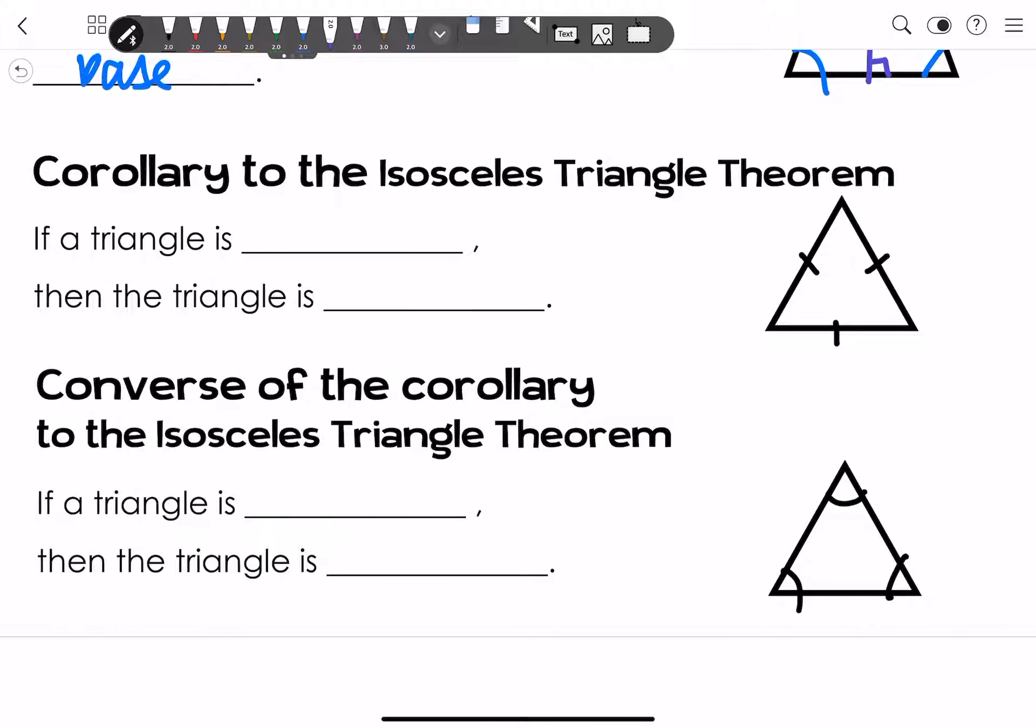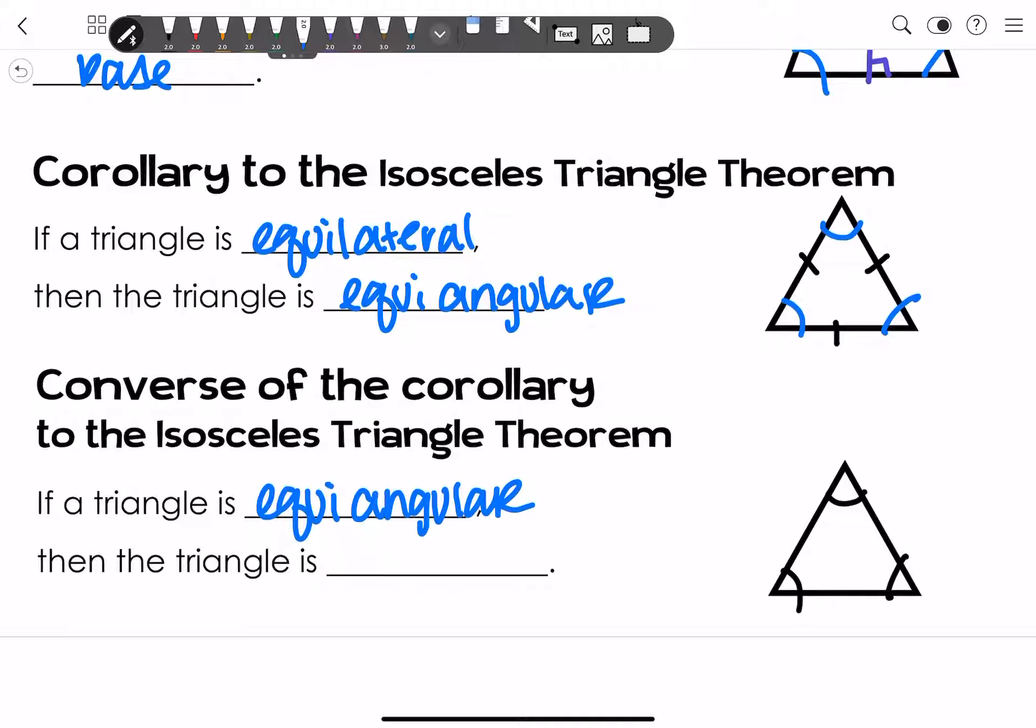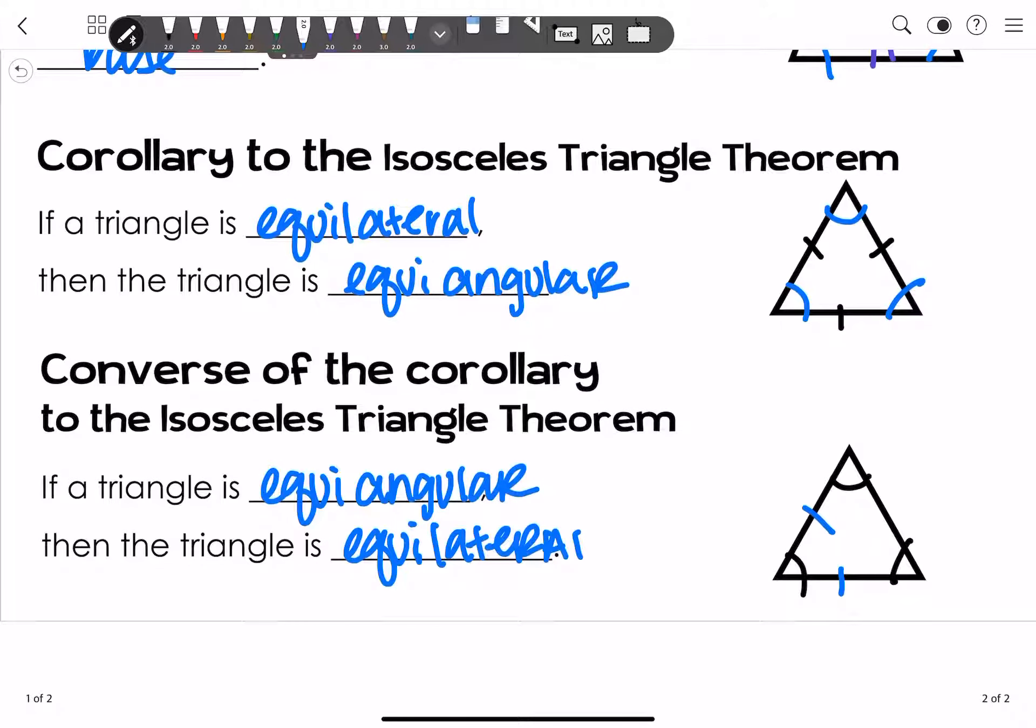Guess what? That isosceles triangle theorem has corollaries, and the corollary has a converse too. I know, it's a little intense. If a triangle is equilateral, then the triangle is also equiangular. Think about it. It's pointing to that angle, pointing to this angle, pointing to this angle, because they're all congruent with each other. The reverse, the converse of this corollary is also true, where if a triangle is equiangular, then the triangle is equilateral. Pretty much, equilateral triangles are also equiangular triangles, and that's going to be part of your definition from now on.